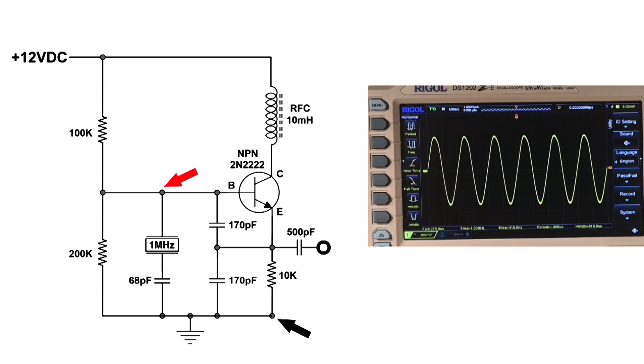Let's take a look at the collector right as it goes into the RF choke. That doesn't look like a sine wave, so that's not the path.